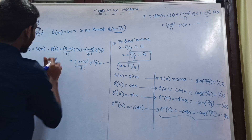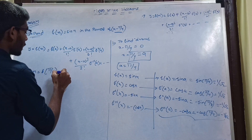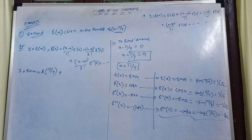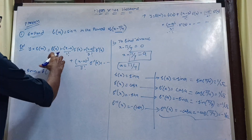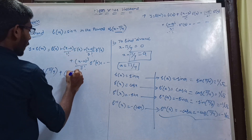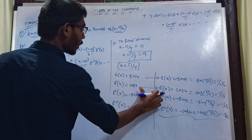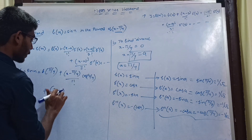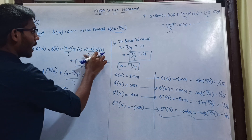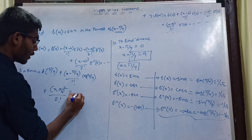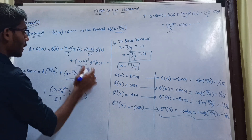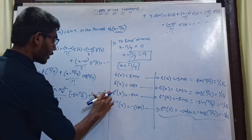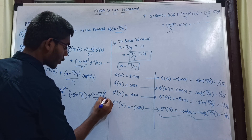So y = f(x) = sin(x) = f(π/4) plus (x minus π/4) by 1 factorial times f'(a), which is cos(π/4), plus (x minus π/4) whole square by 2 factorial times f''(a), plus (x minus π/4) whole cube by 3 factorial times f'''(a), which is minus cos(π/4).